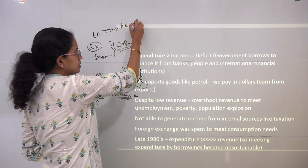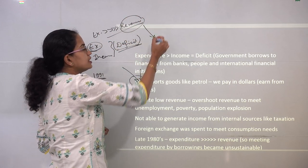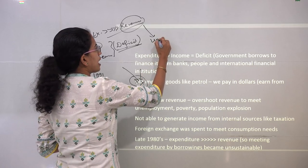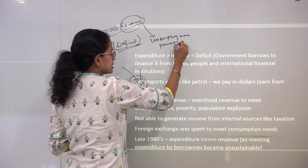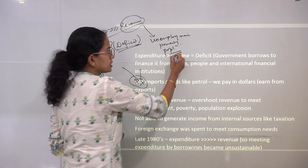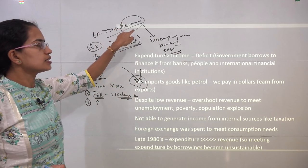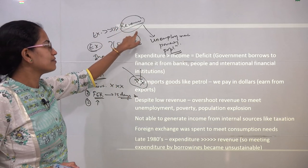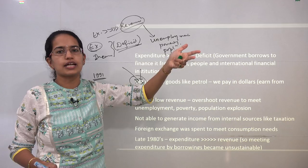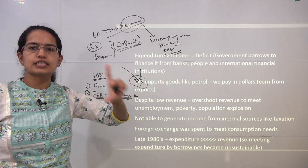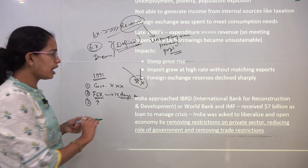Suddenly, the expenditure became much greater than the revenue that India was earning. This low revenue was accompanied with higher rates of unemployment. Very high unemployment was registered, poverty was registered, and a very high rise in population growth was registered during this period. All three things further accentuated the low revenue, and again since revenue was far less than expenditure, the deficit trap was increasing, putting a greater burden on the Indian economy.